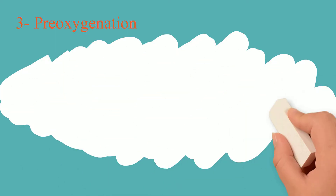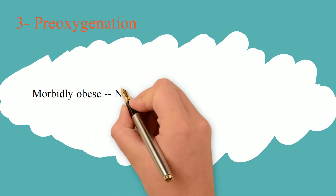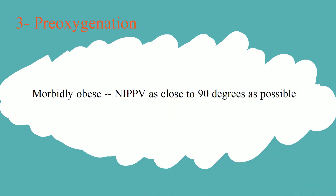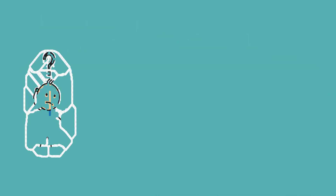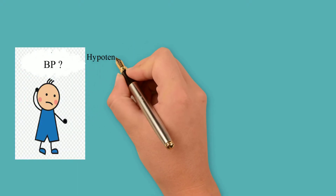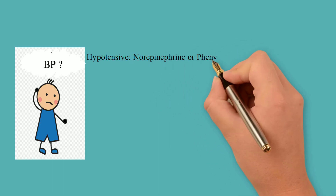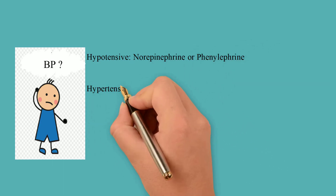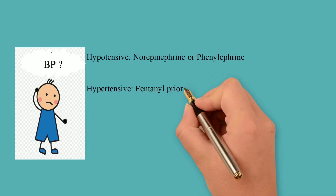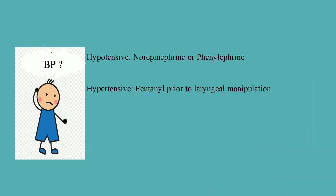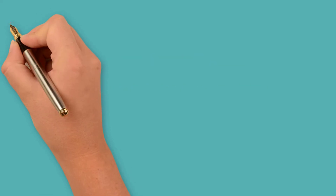Non-invasive positive-pressure ventilation and sitting position will improve pre-oxygenation in morbidly obese patients. Before proceeding, check the blood pressure. Hypotensive patients need a small dose of vasopressors prior to induction — norepinephrine or phenylephrine can be used. Hypertensive patients will benefit from a small dose of fentanyl prior to laryngeal manipulation.